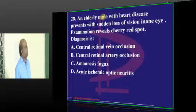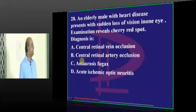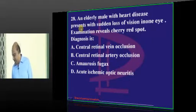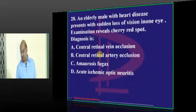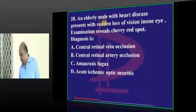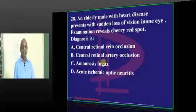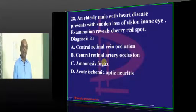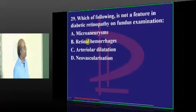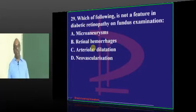Elderly man with heart disease and sudden loss of vision — Guntur, Visag, and Nampali students answer correctly except Thirupati who thinks it is CRV. The correct answer is CRAO — central retinal artery occlusion.